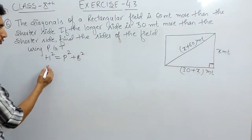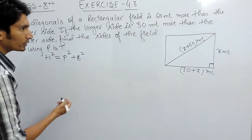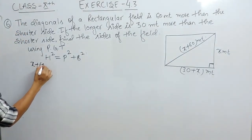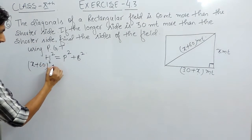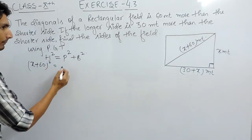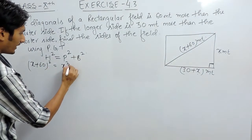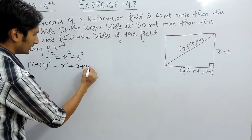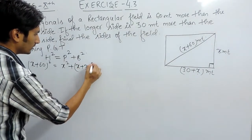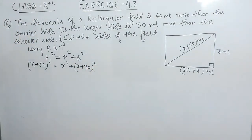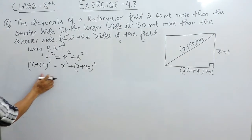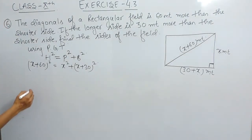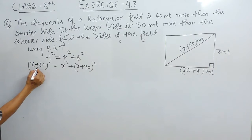Now we can substitute the values. The hypotenuse here is x plus 60, so that is whole squared. The perpendicular is x squared and the base is x plus 30 whole squared. Now we have this equation and we can expand it further to solve it.